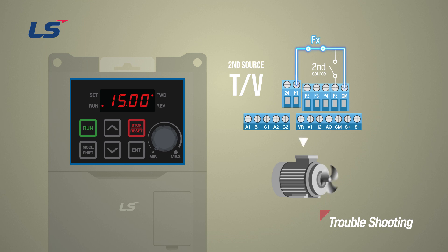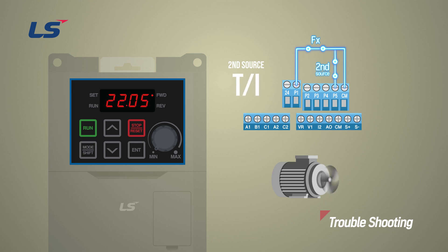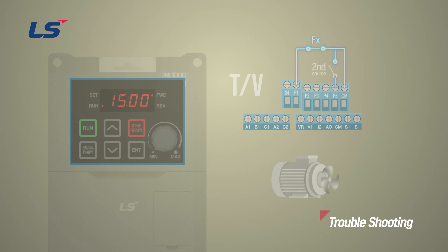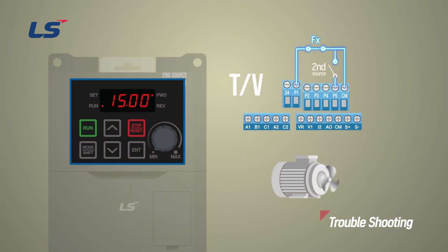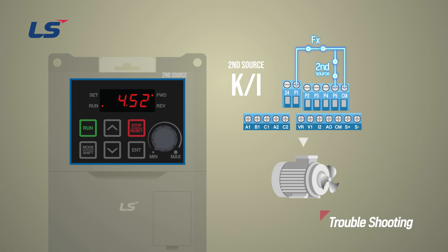If the second operation is terminal command, the operation will continue as the operation command is identical to the original operation and only the frequency source is changed. But if the command source is also changed, the operation will be stopped. The operation will resume once the changed command source is enabled.